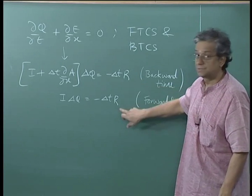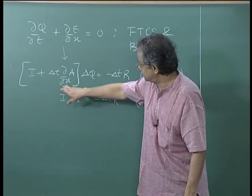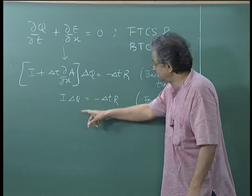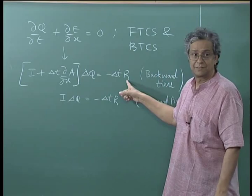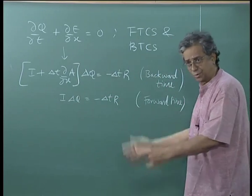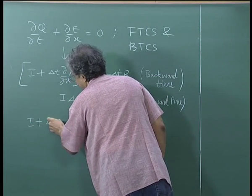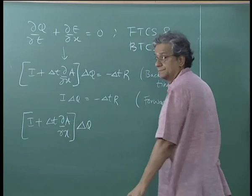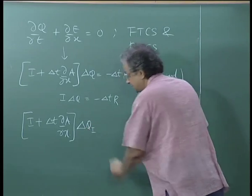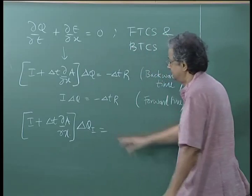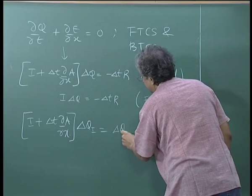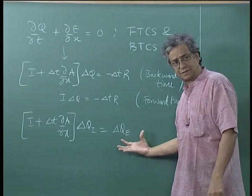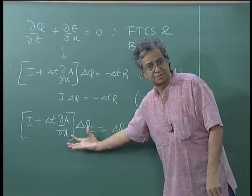If you use central differences to discretize r and central differences to discretize that, then it becomes backward time central space and forward time central space. So Δq = −Δt · r. Another way to look at BTCS is: Δq implicit equals Δq explicit — we are calculating the explicit correction and from there getting the implicit correction.